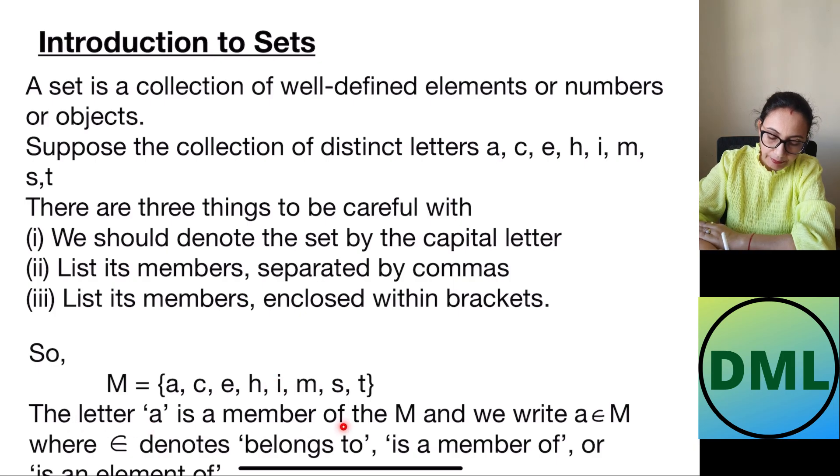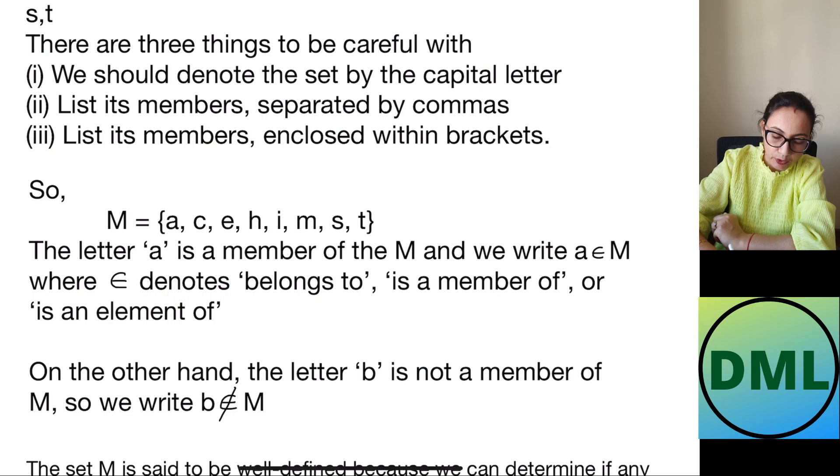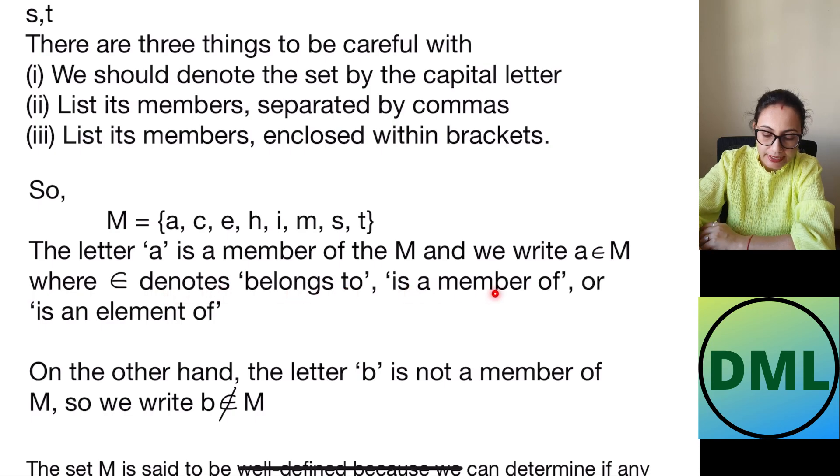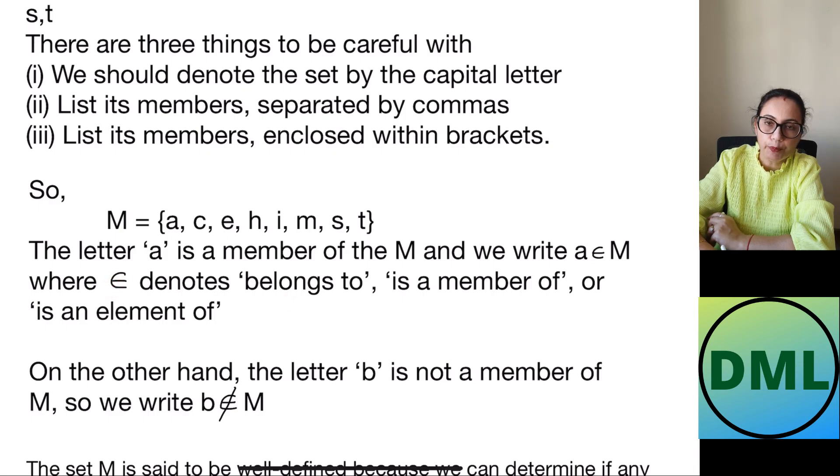The letter A is the member of M and we can write it as A belongs to M. This symbol basically denotes belongs to or is a member of or is an element of. You can say any three things. So if I say A belongs to M or A is a member of M or A is an element of M. So this symbol denotes belongs to.